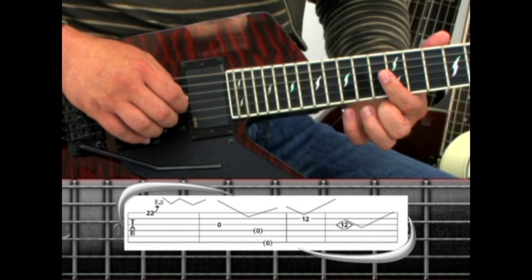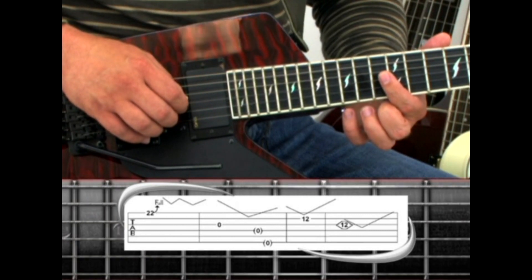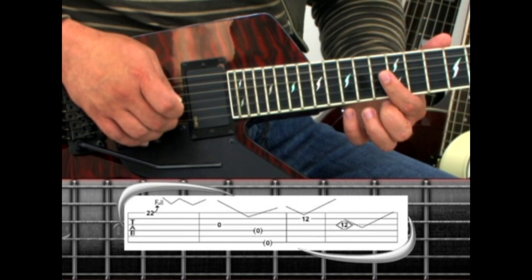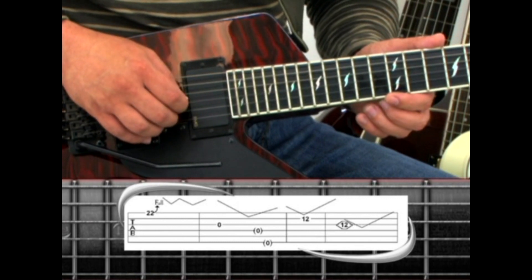You can also dive on harmonics. The fourth example in the sheet music has us lightly touch the third string directly above the 12th fret, but don't press down on the string. Strike the harmonic and dip the tremolo bar.